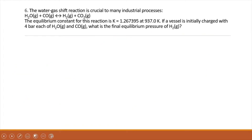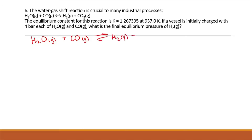Moving on to number six. We're told the water-gas reaction is crucial to many industrial processes, and we're given the equilibrium constant. If a vessel is initially charged with 4 bar each of water and carbon monoxide, what is the final equilibrium pressure of H2? Let's start with an ICE table. H2O plus CO in equilibrium with H2 plus CO2. Notice everything is in the gas phase here, so we cannot rule anything out — even water is gaseous.